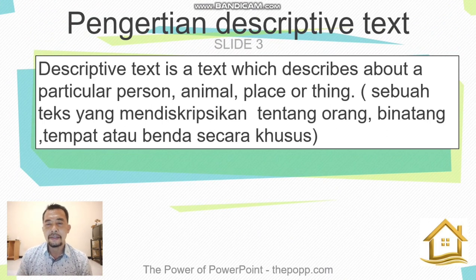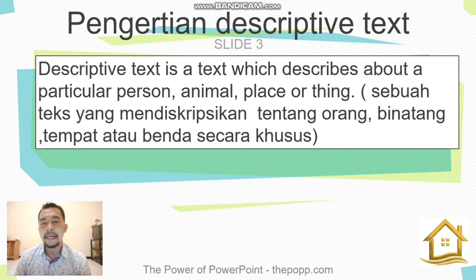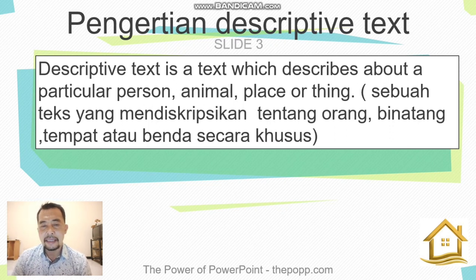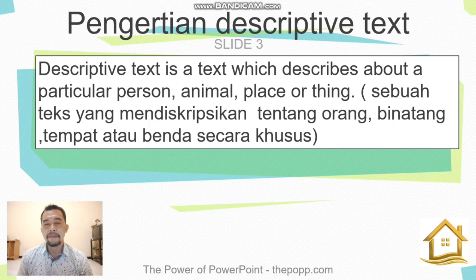We are going to look at the definition of descriptive text. A descriptive text is a text which describes a particular person, animal, place, or thing. In Indonesian, it means a text that describes a person, animal, place, or object specifically — not in general. For example, if we talk about a person, the title might be 'My Friend' or 'My Uncle'; for an animal, 'My Cat', and so on.